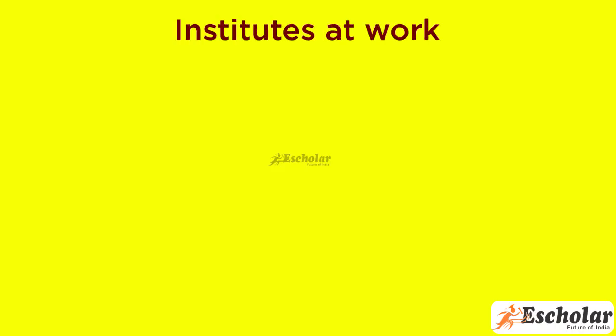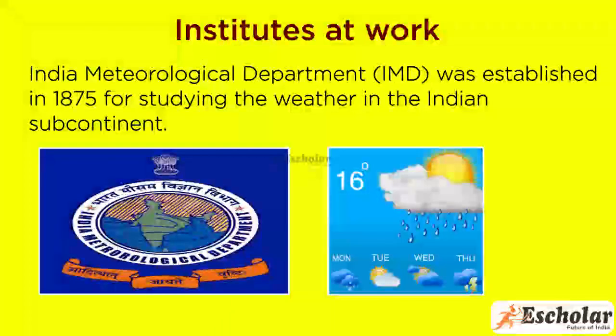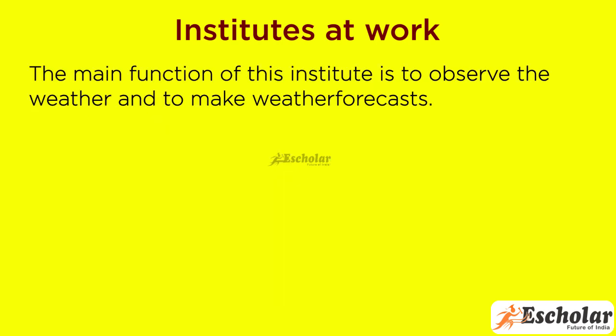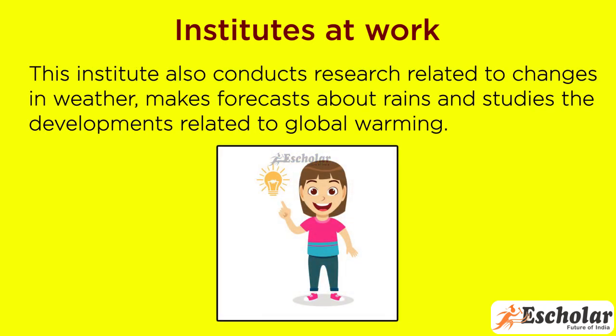India Meteorological Department (IMD) was established in 1875 for studying the weather in the Indian subcontinent. The main function of this institute is to observe the weather and to make weather forecasts. This institute also conducts research related to changes in weather, makes forecasts about rains, and studies the developments related to global warming.